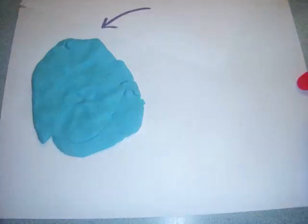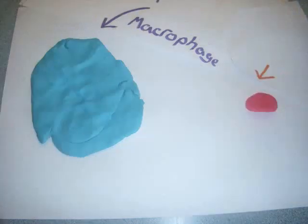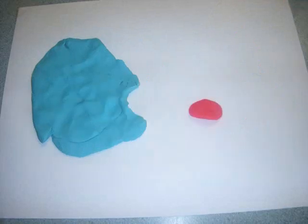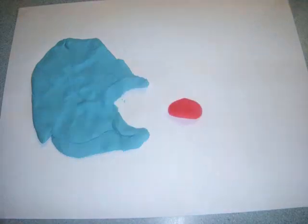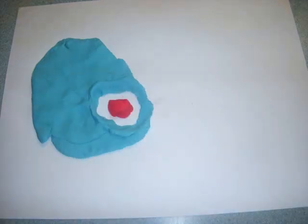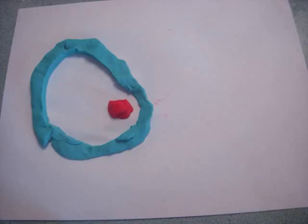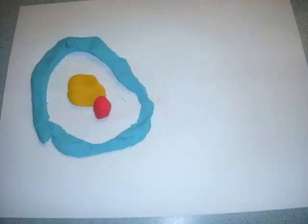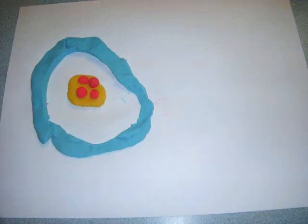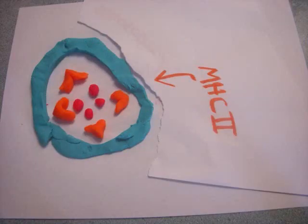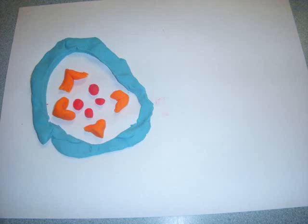The cell mediated response begins when an immune cell engulfs an antigen by way of phagocytosis. While in the macrophage, the antigen is known as a phagosome. After being engulfed, the phagosome is digested by lysosomes and enzymes inside the cell. The fragmented phagosome is attached to the major histocompatibility complex 1, or MHC1. The MHC then presents the fragments on the macrophage's plasma membrane.